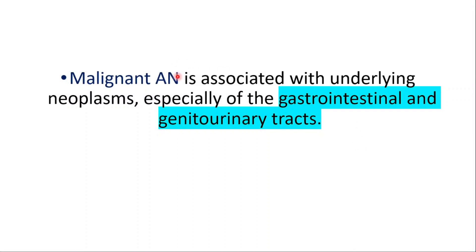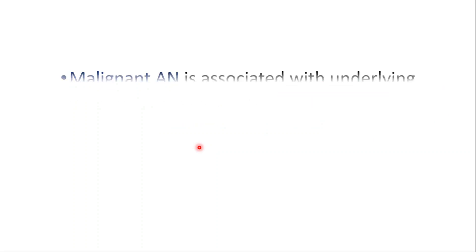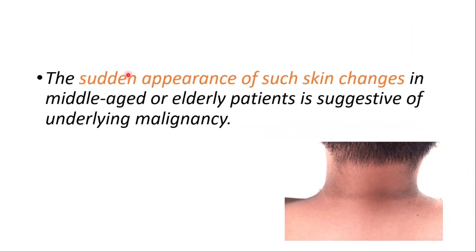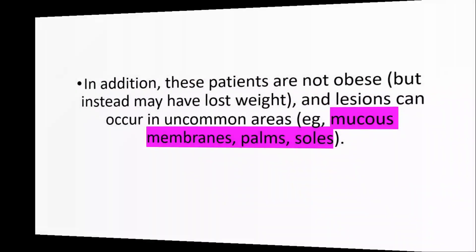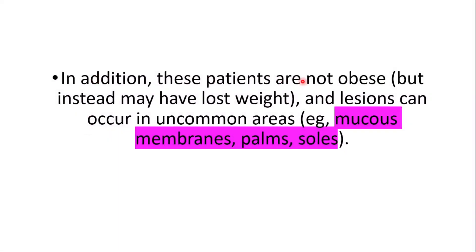Malignant acanthosis nigricans is associated with underlying neoplasms, especially of the gastrointestinal and genitourinary tracts. The sudden appearance of such skin changes in middle-aged or elderly patients is suggestive of underlying malignancy. In addition, these patients are not obese but may instead have lost weight, and lesions can occur in uncommon areas such as mucosal membranes, palms, and soles.